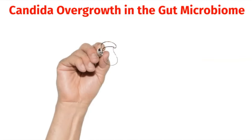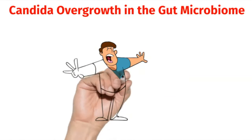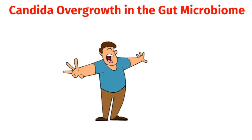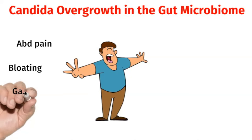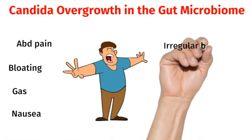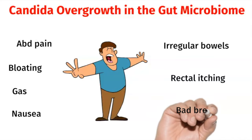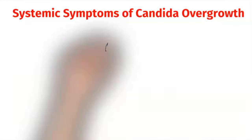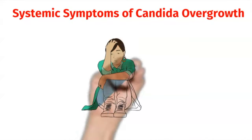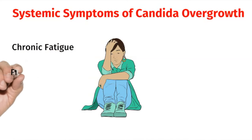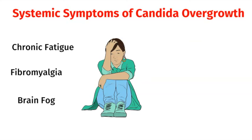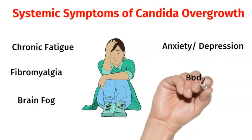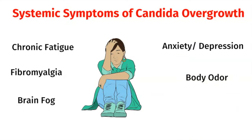So it could be due to an overgrowth of Candida in the gut microbiome. GI symptoms of Candida overgrowth include abdominal pain, bloating, gas, nausea, irregular bowel habits, rectal itching, as well as bad breath. Systemic symptoms include chronic fatigue, fibromyalgia, brain fog, mood symptoms like anxiety or depression, body odor, or a general sense of feeling sick all over.